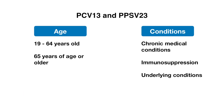This leads us to the older guidelines, which consisted of Prevnar-13 and Pneumovax. With these previous guidelines, there were various factors to consider: first, age — was the patient 65 years or older, or between 19 to 64 years old? Physicians also had to consider three other categories: chronic medical conditions, immunosuppression, and other underlying conditions.